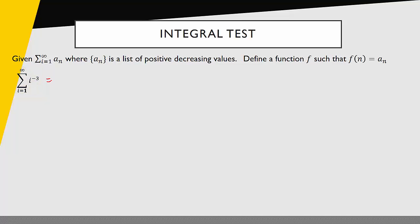If I write this in expanded form I will get, when i equals 1, 1 over 1 cubed, which is 1, plus 1 over 2 cubed, which is 8, 1 over 3 cubed, which is 27, and so on and so forth. First I check the criteria: are the terms of my series positive and decreasing? Yes they are. Next I need to define this function, so I'm going to let f of x equal x to the negative 3 power. The idea is if I put in integer values in my function, I should get the terms of my series.